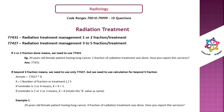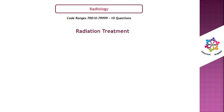Example 1: 4 fractions of radiation treatment. The answer is 77427, because the description covers 3 to 5 fractions — no calculation needed.